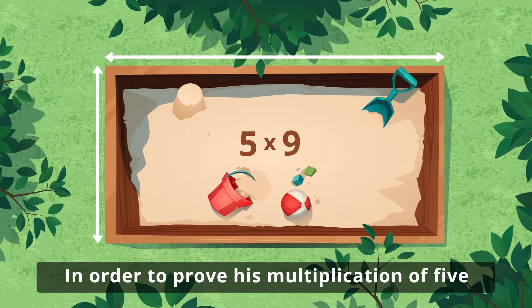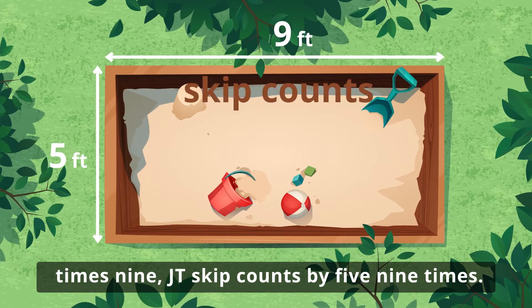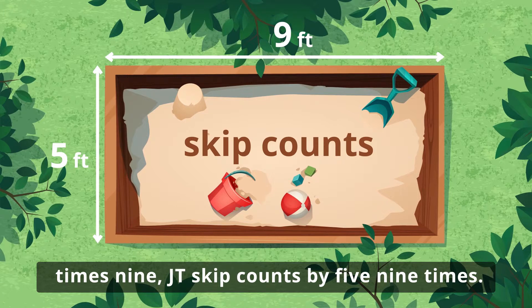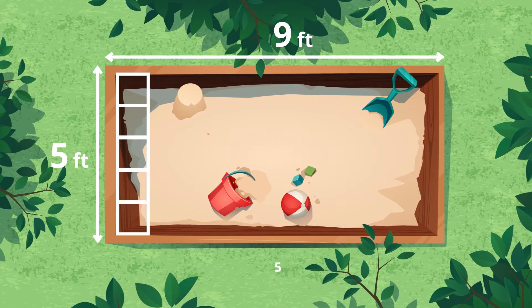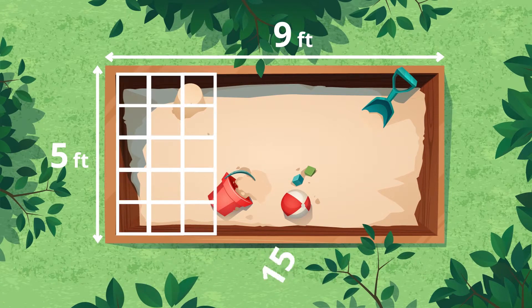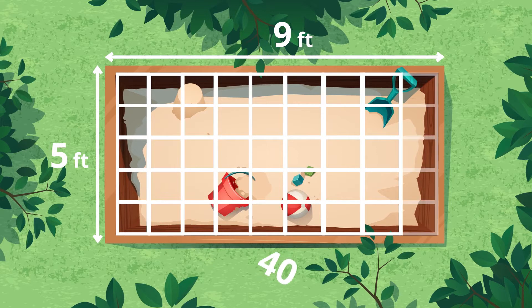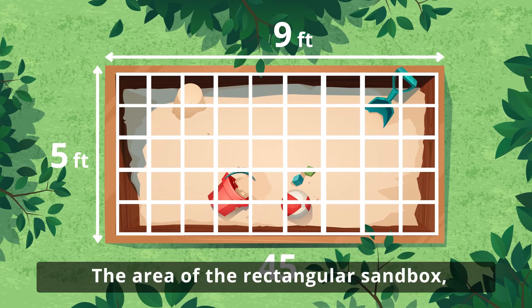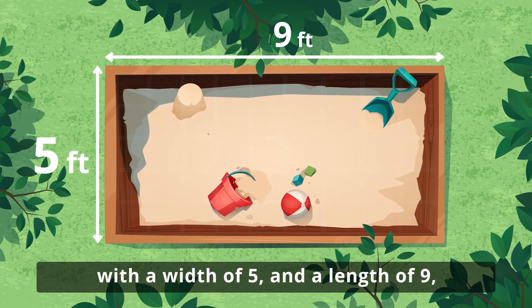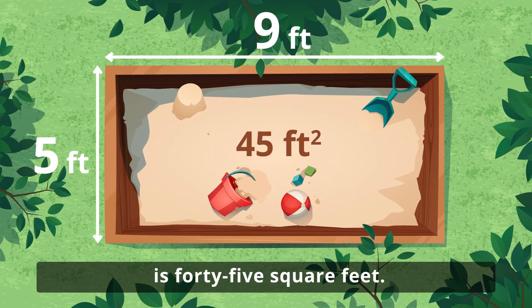In order to prove his multiplication of 5 times 9, JT skip counts by 5 nine times: 5, 10, 15, 20, 25, 30, 35, 40, 45. The area of the rectangular sandbox with a width of 5 feet and a length of 9 feet is 45 square feet.